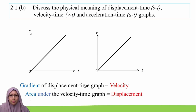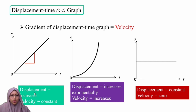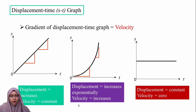Looking at the displacement-time graph: the gradient equals velocity. If the displacement is increasing with a constant gradient, then the velocity is constant. If the displacement is increasing exponentially, the gradient increases from smaller to higher values, meaning the velocity is increasing.